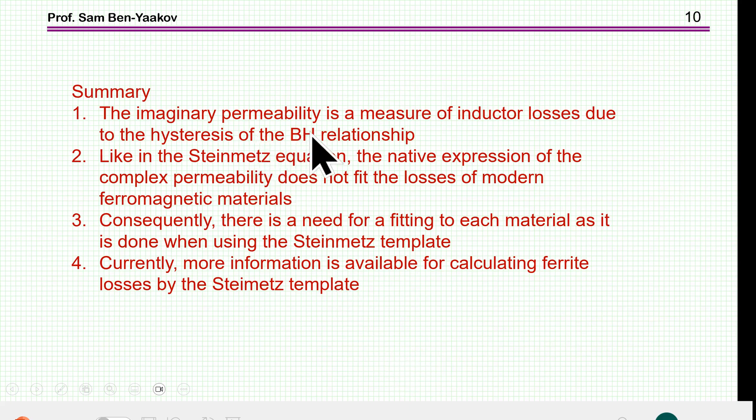So, what is the summary of all this? The imaginary permeability is the measure of inductor losses due to the hysteresis of BH relationship, and it comes about because of the phase shift between B and H. Now, like in the Steinmetz equation, the native expression of the complex permeability does not fit the losses of modern ferromagnetic material. So, you do have to do fitting to some template of the form in order to get the coefficients. Now, consequently, there is a need for fitting for each material as is done today when using the Steinmetz template.